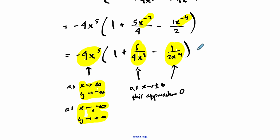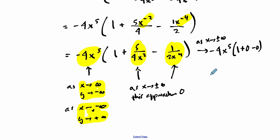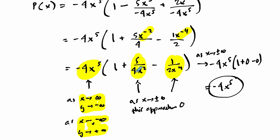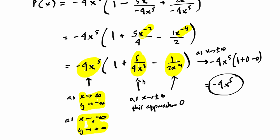As x approaches positive or negative infinity, those terms approach 0. What you're left with is -4x⁵ times (1 + 0 - 0), which is just -4x⁵ itself. So p(x) has the same end behavior as q(x). The two-step process is: factor out your leading term, then identify which remaining terms are approaching 0. We'll talk more about that — thanks.